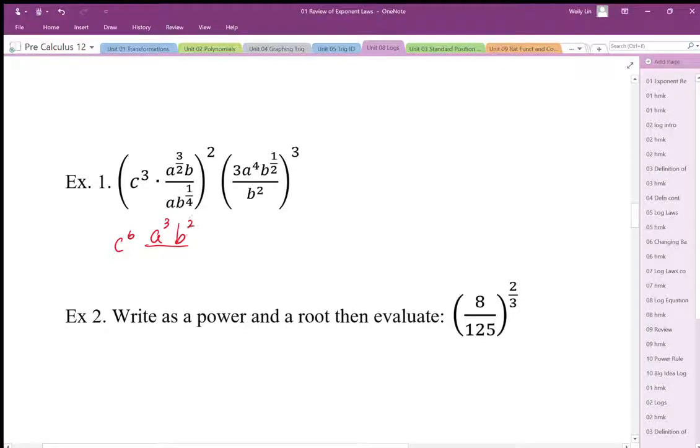Here I'm going to get a squared. I'm going to get b to the power 2 over 4, which I'm going to simplify to 1 half. So this is one bracket. The other bracket, I'll do the same thing. Then 3 to the power 3, a to the power 12, b to the power—this is going to combine to 3 over 2.